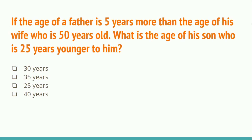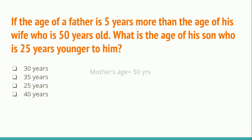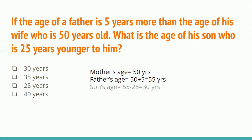The next question: if the age of a father is 5 years more than the age of his wife, who is 50 years old, what is the age of his son who is 25 years younger than the father? Options are 30, 35, 25, or 40 years. The mother's age is 50, so the father's age is 55. Since the son is 25 years younger than the father, son's age = 55 − 25 = 30 years.